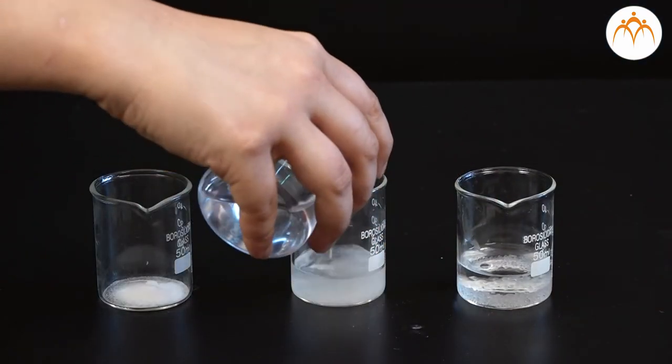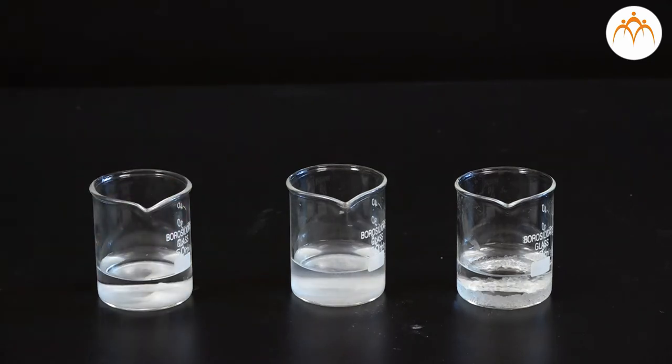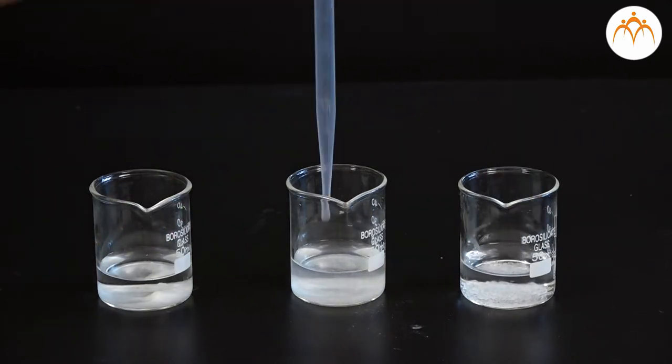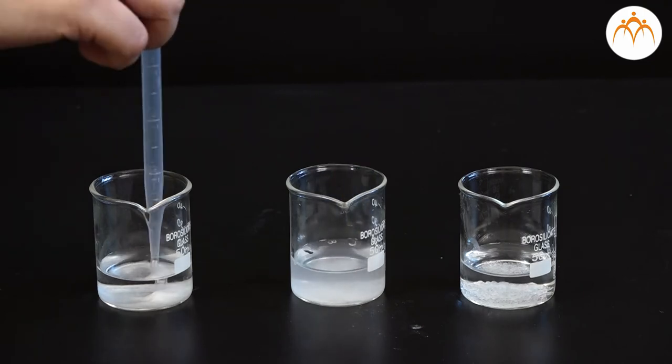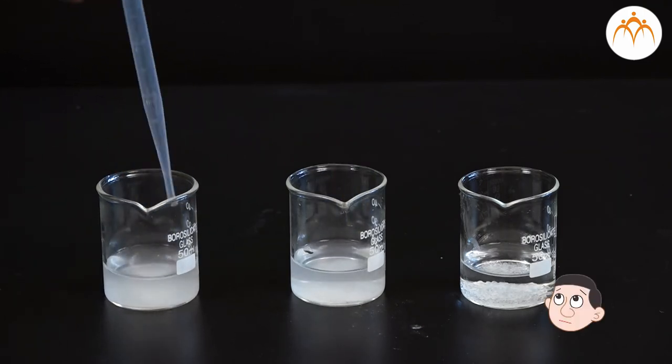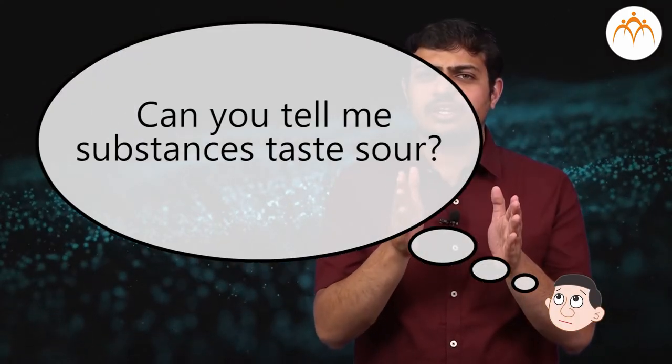Let's also try to put these items one by one in water and check what happens. For sour and astringent, they dissolve in water. Can you tell me why substances taste sour? Yes, it is due to the presence of a typical compound in them. Such compounds are called acids.